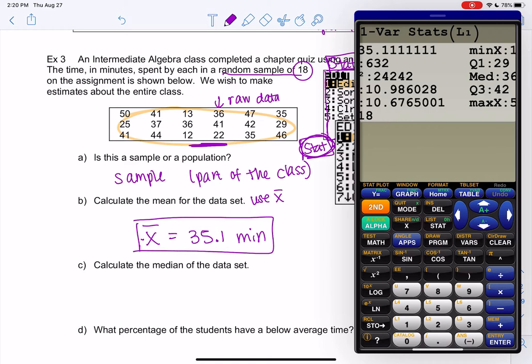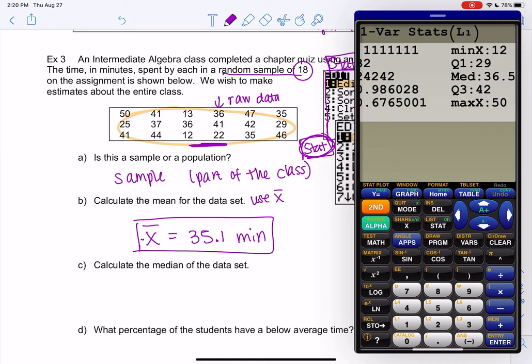Median. So you have to scroll down a little. Hit the down arrow, and you'll see that the median is 36.5. And this is in minutes. The mean and the median have the same units. Cool.